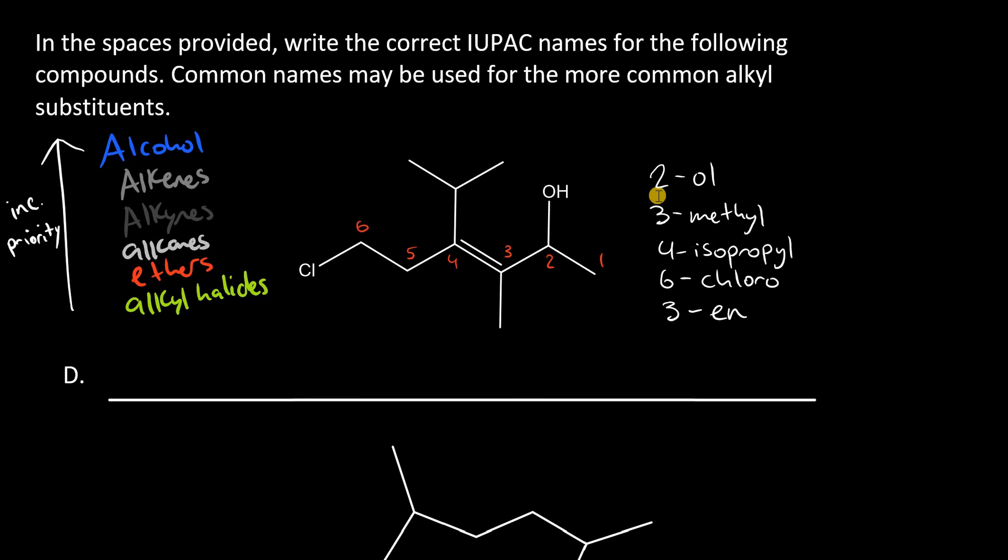So, this numbering has to do with the prioritizations of IUPAC only. Now, when we write the name, we just alphabetize this. So, the name should be 6-chloro followed by 4-isopropyl-3-methyl-hexene-ol. And we write in these numbers like so. So, it's a hexanol with the alkene at 3 and the alcohol at 2.